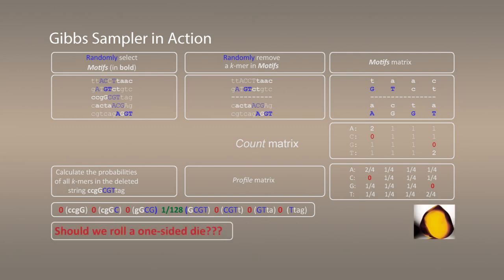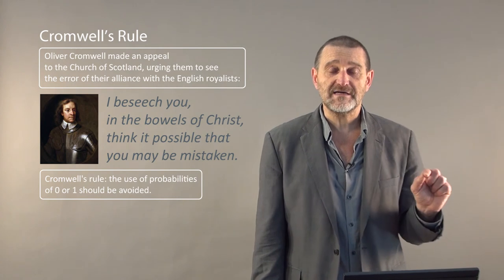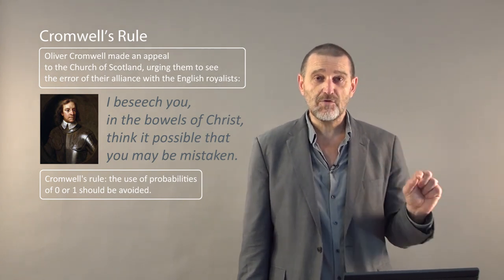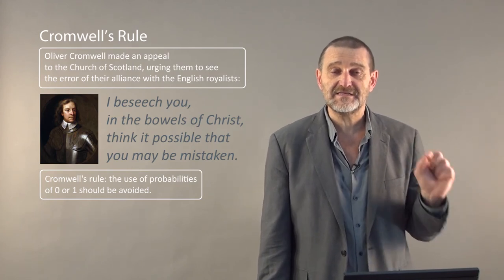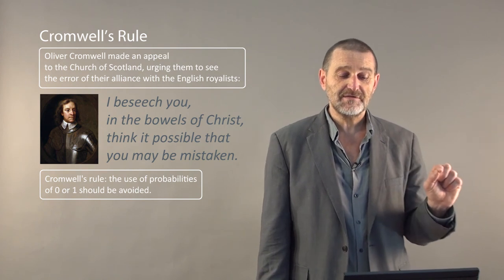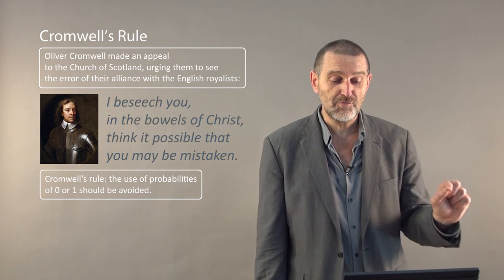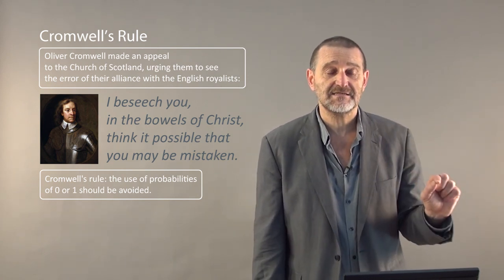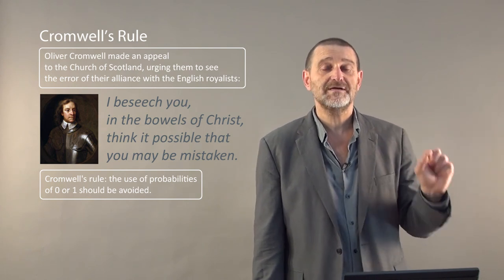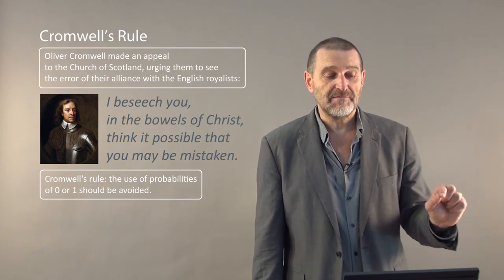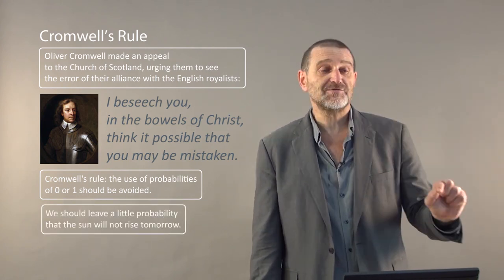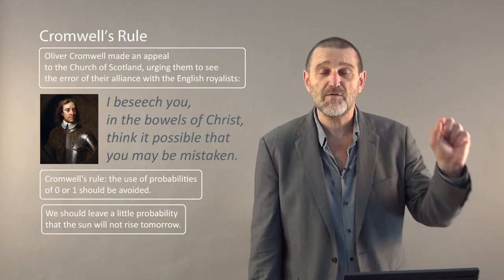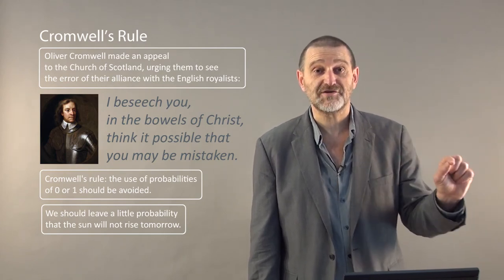Should we roll a one-sided dice? Four centuries ago, Oliver Cromwell warned us against this. In his famous appeal to the court of Scotland, trying to convince them that their alliance with the king was an error, he said: 'I beseech you in the bowels of Christ, think it possible that you may be mistaken.' Cromwell's rule in statistics implies that the use of probabilities 0 and 1 should be avoided unless we are talking about a purely logical statement. Thus, we should give at least a small probability even to extremely unlikely events — for example, a small probability to the fact that the sun won't rise tomorrow.